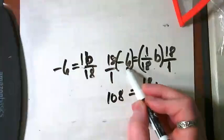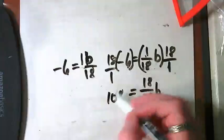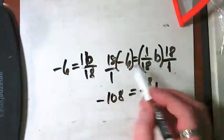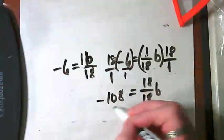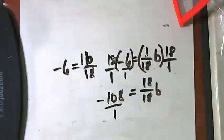But this is a positive 18 and a negative 6. So we end up with negative 108. There's really a 1 over 1 there, isn't there? 1 times 1? 1. Making everything visible.